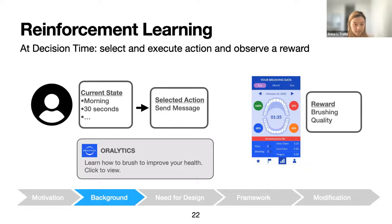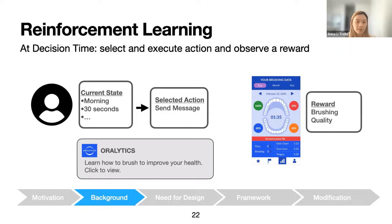Using these two components, the RL algorithm selects an action and observes a reward. For example, for one user whose current state is morning decision time and who brushed for 30 seconds on average the day before, the action selection procedure might say to send a message. The user might get a push notification like 'Learn how to brush to improve your teeth, click to view.' After the action is selected, the algorithm observes the reward — brushing quality.